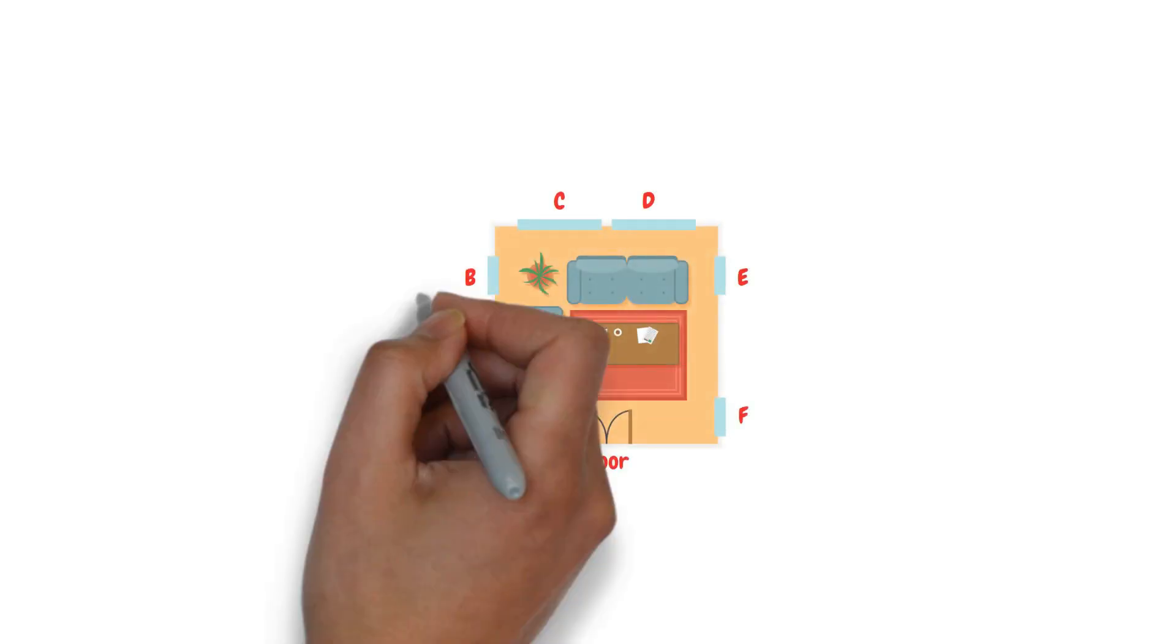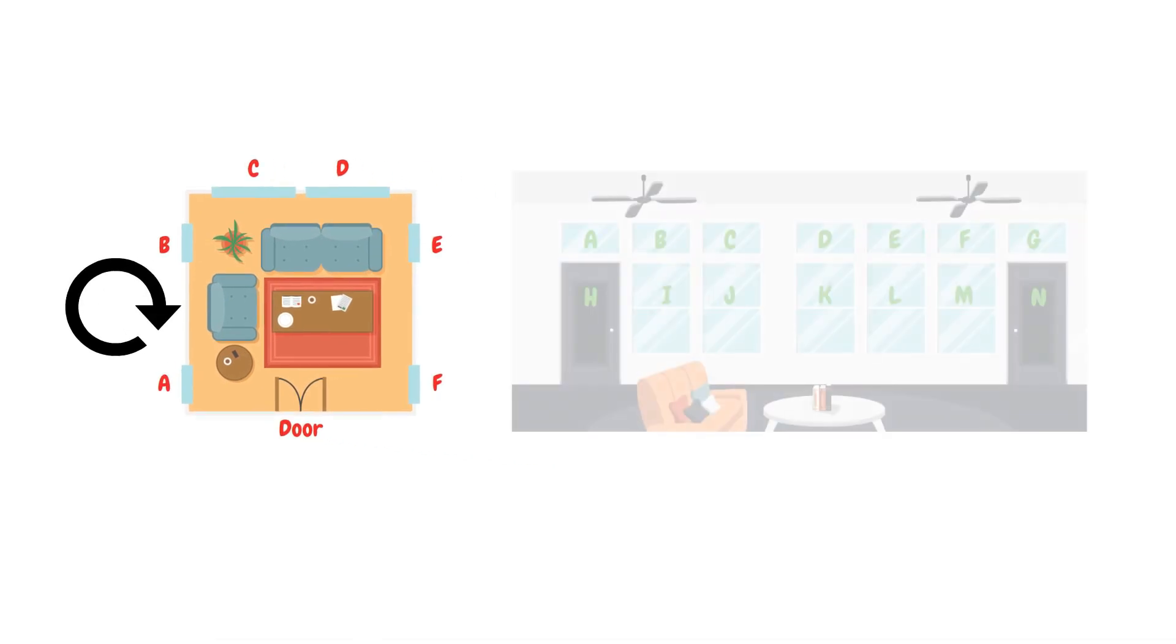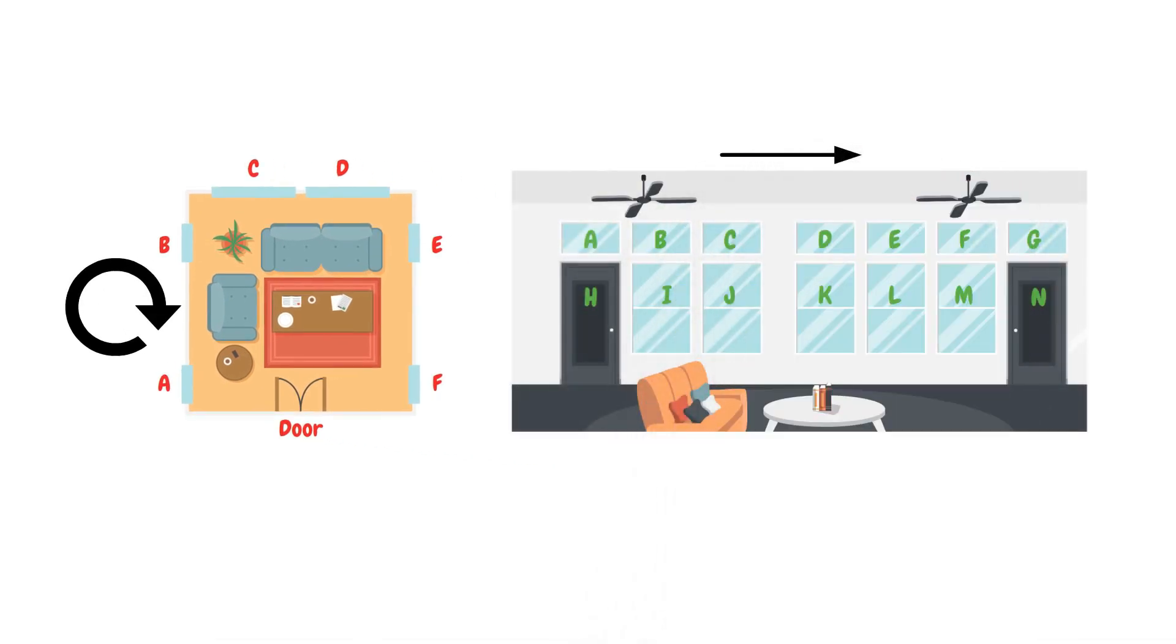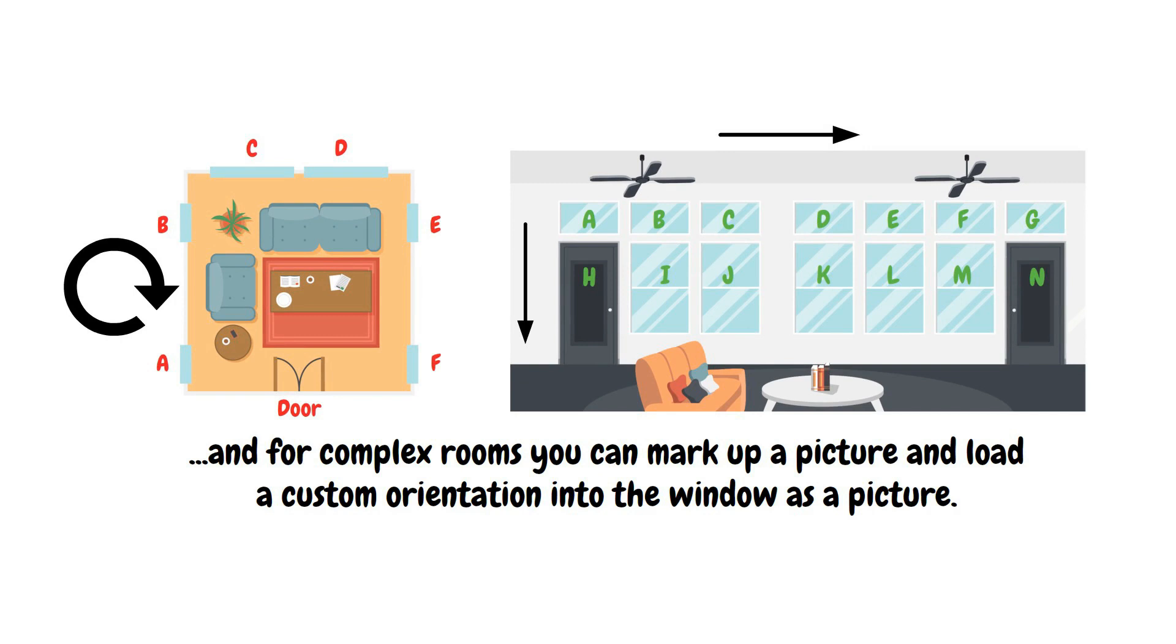In summary, we always move left to right or clockwise in a room. We always start on a wall with top-left orientation and then move left to right, then top to bottom. And for complex rooms, you can mark up a picture and load a custom orientation into the window as a picture.